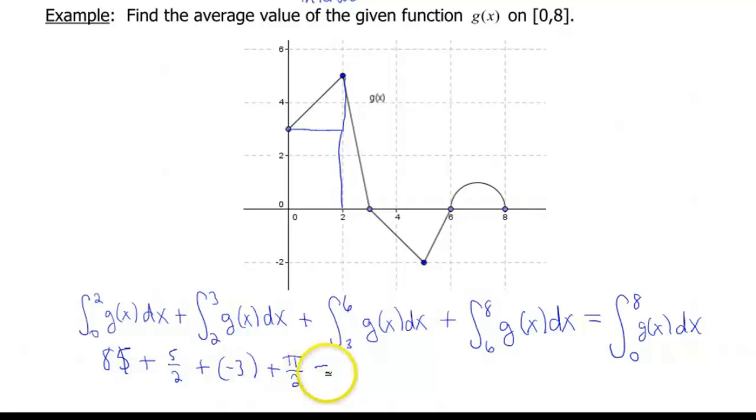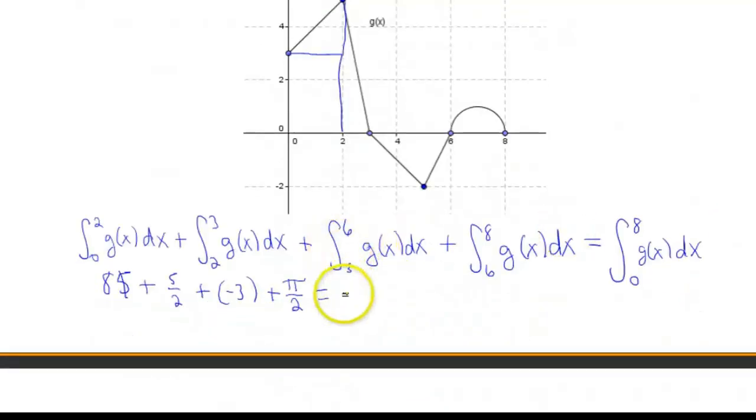Okay, so anyhow, when you go ahead and figure these values out, we got some fractions in here that we can work with. So that's gonna give us 5, which will be 10 over 2, plus 5 over 2, plus pi over 2. So that's gonna give us a grand total of 15 plus pi all over 2.